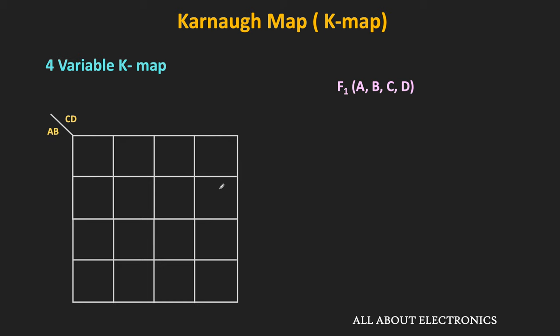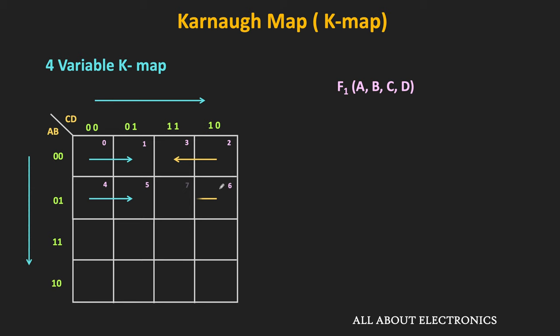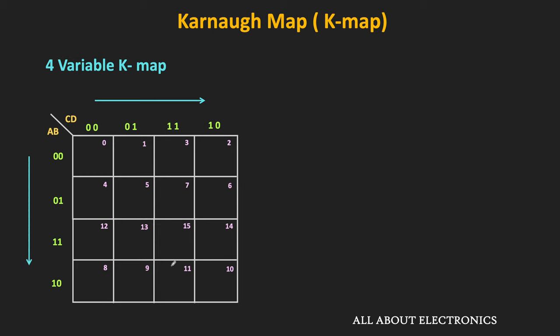First, write down the possible combinations of variables a and b beside each row in grey code form. Similarly, write down the possible combinations of c and d on top of each column in grey code form. For numbering each cell, start from the top left corner and write 0 and 1. Then write 2 and 3 from right to left. In the second row, write 4 and 5 from left to right, then 6 and 7 from right to left. Skip to the fourth row and write 8 and 9 from left to right, then 10 and 11 from right to left. In the third row, write 12 and 13 from left to right, then 14 and 15 from right to left. That is how we construct the kmap for four variables.